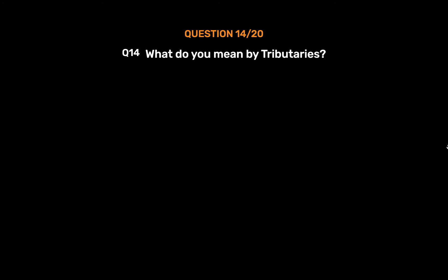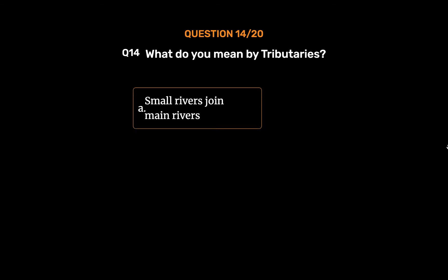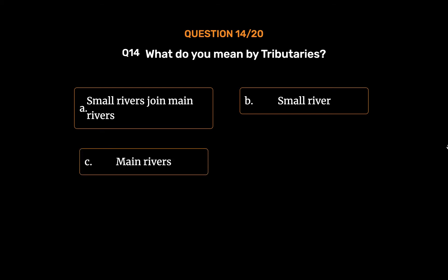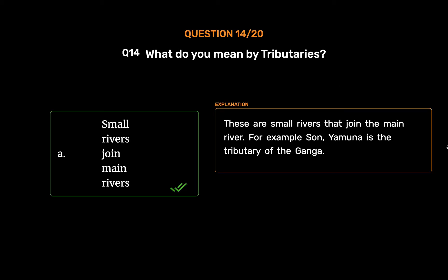Question number 14. What do you mean by tributaries? Option A: Small rivers join main rivers. Option B: Small river. Option C: Main rivers. Option D: Main rivers. The correct answer is Option A — small rivers join main rivers. These are small rivers that join the main river. For example, Yamuna is the tributary of the Ganga.